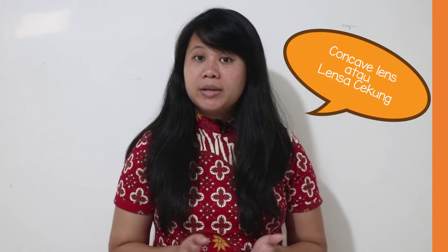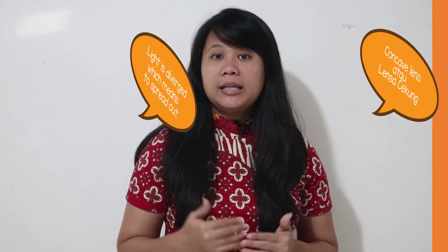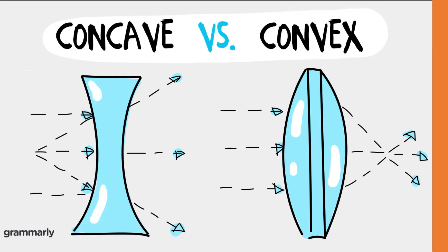Concave lens, because it's thin in the middle or caves in. Light is diverged, which means to spread out. Teman-teman, mari kita lihat contoh dari lensa cekung atau concave lens. Di gambar ini kita bisa melihat bahwa cahaya yang masuk nantinya akan menyebar. Lensa itu salah satu benda transparan — benda yang bisa menembus cahaya. Jadi, kalau pada lensa cekung, cahaya yang masuk nantinya bisa menembus tapi akan menyebar. Itu adalah contoh dari concave lens.